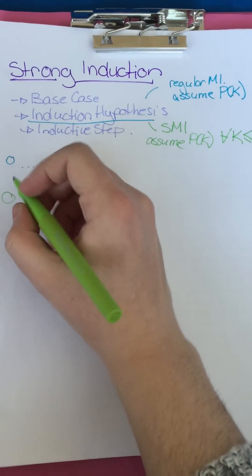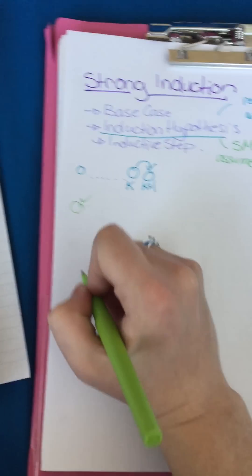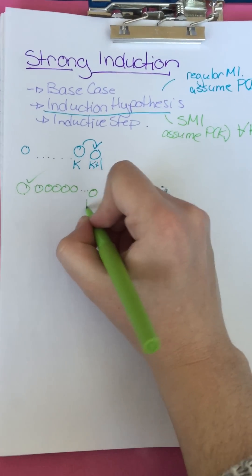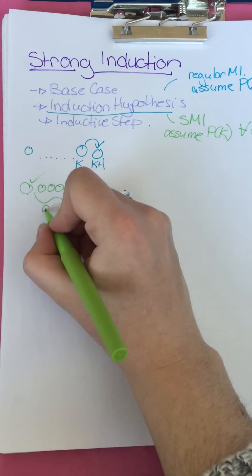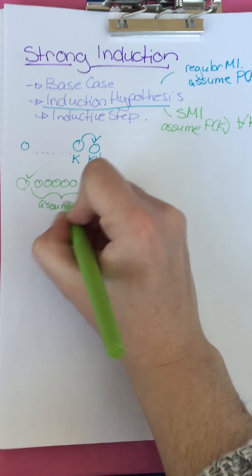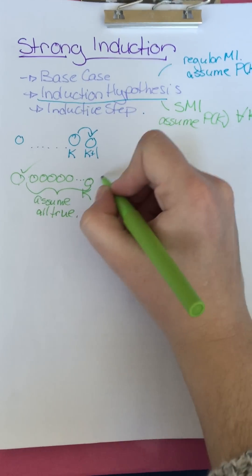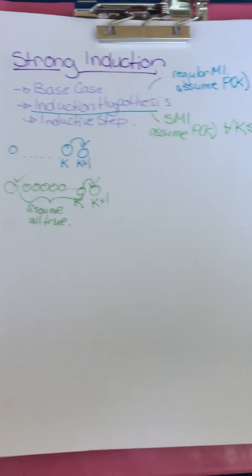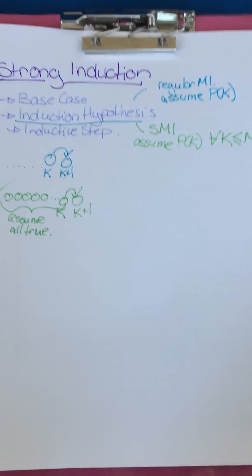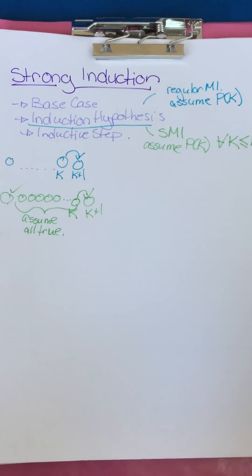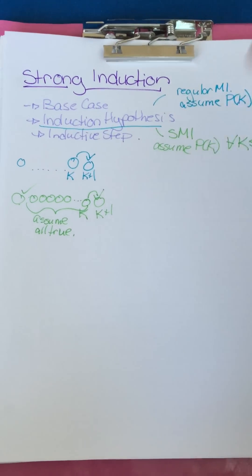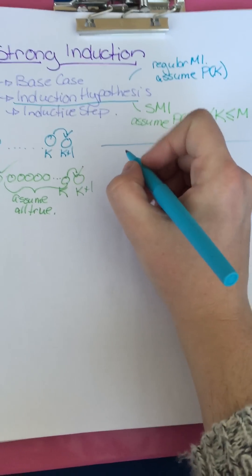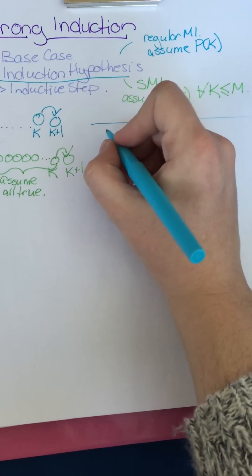With strong induction, we take the first one, show it's true, then take the next one, and the next, all the way up to k, and we assume all of them are true. Then, using all of those, we show that k+1 is true. This is useful in examples where you have multiple things going on — say you need to know two or three things back.